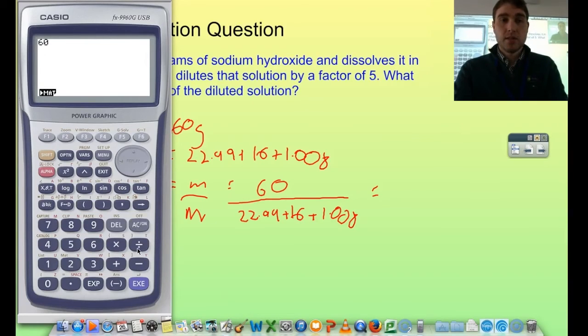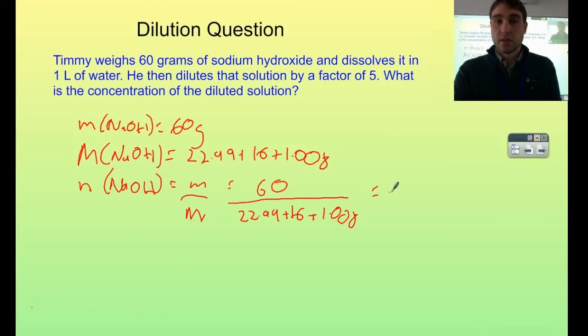So 60 divided by, I'm going to put it in brackets, 22.99 plus 16 plus 1.008. Close that off. And my answer is 1.5. To the startling number of significant figures, my answer is 1.5 moles.